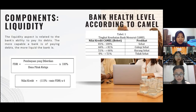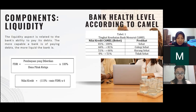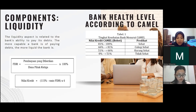The last component is Liquidity. The liquidity aspect is related to the bank's ability to pay its debts — the more capable a bank is of paying debts, the more liquid it is. The ratio used to assess liquidity is the Financing to Deposit Ratio (FDR), looking at public financing of funds received by the bank. The formula is: FDR = Pembiayaan yang Diberikan / Dana Pihak Ketiga × 100%, with a credit value equal to 115% minus ratio FDR multiplied by four.